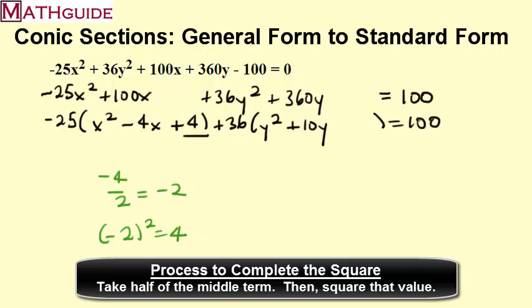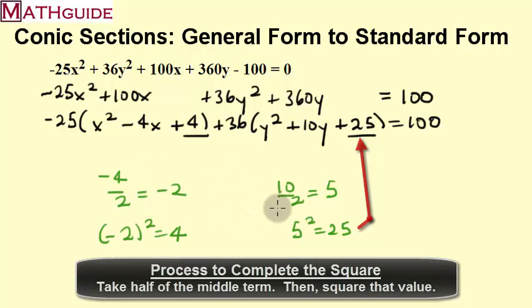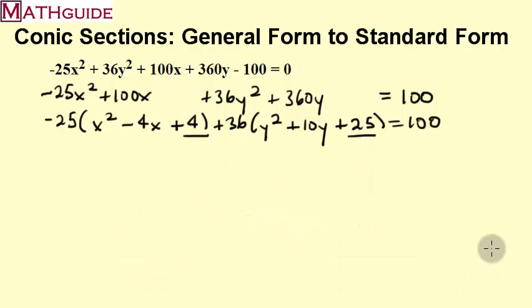I'm going to do the same thing now for the y value. I take the middle term, the term in front of the y, the non-squared term. I take that number and I divide it by 2. And then I take that value we just got and square it. So that's the value I'm going to put right here, and it creates a perfect square trinomial. Now I'm going to erase these numbers. I don't need these anymore.